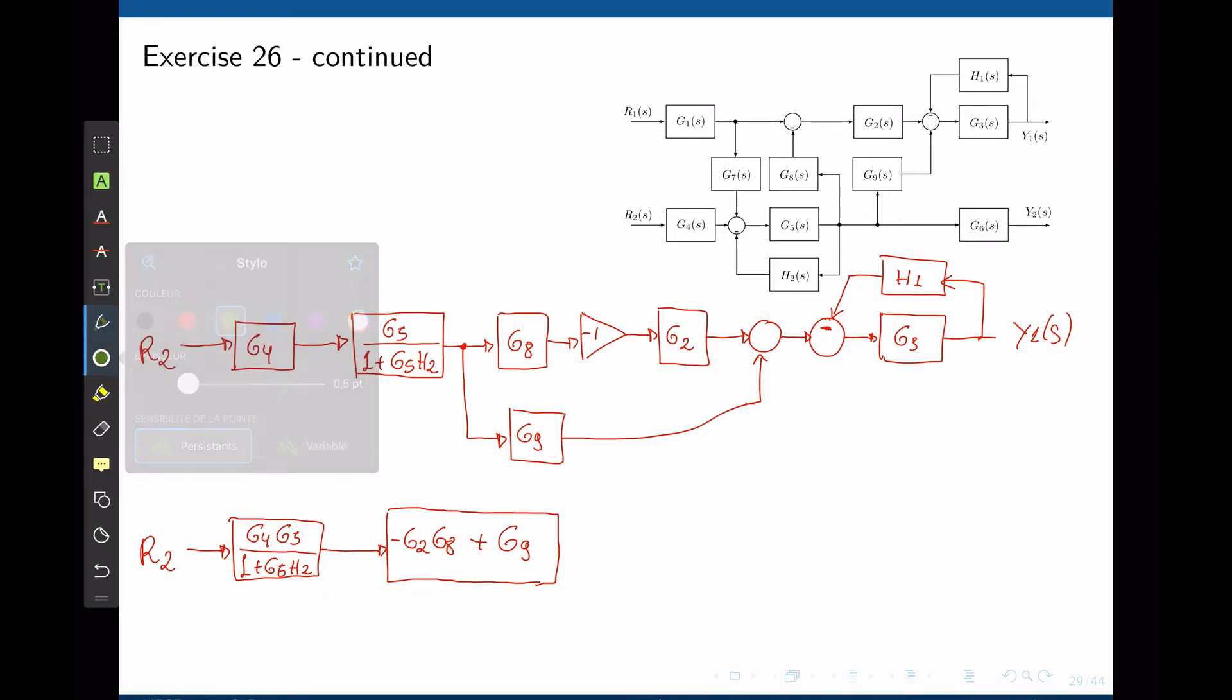We can simply add G9 to this block diagram, and if now our signal is again called A, the output that we have here is negative G8 G2 A plus G9 A, which is exactly what we have at that point.